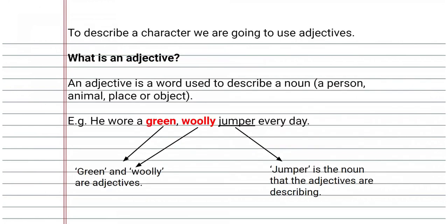So, adjectives are words, as you know, which describe the noun. A noun is the name of something, for example, an animal, place, or an object.